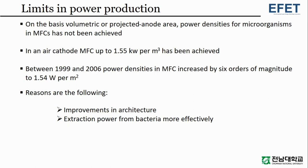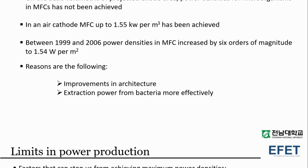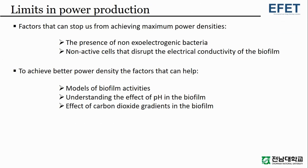The factors limiting power production are significantly important. On a volumetric basis, up to 1.55 kilowatts per meter cubed has been achieved in an air cathode MFC. Between 1999 and 2006, power densities in microbial fuel cells increased by six orders of magnitude to 1.54 watts per meter squared, due to improvements in architecture and extraction of power from bacteria. Factors limiting maximum power densities include the presence of non-exoelectrogenic bacteria and non-active cells that disrupt the electrical conductivity of the biofilm.